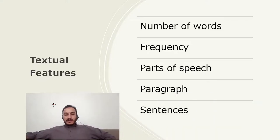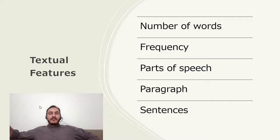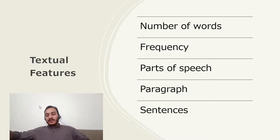For textual data, text can have different features — those features can be the number of words, the length of a word, the frequency of specific words, the part of speech in the text, paragraph or sentence structure, and different named entities. There can be so many features present in textual data.